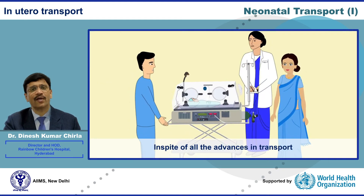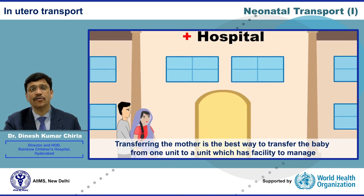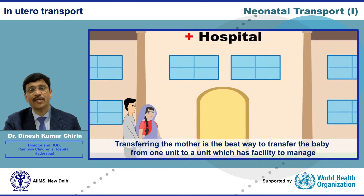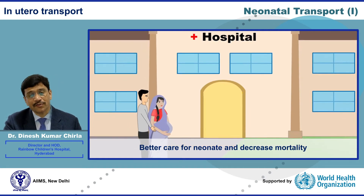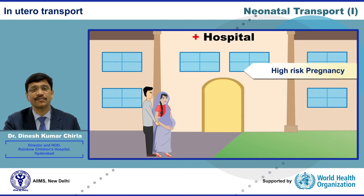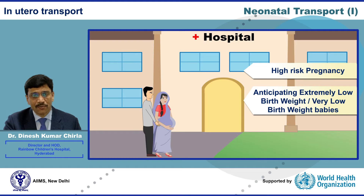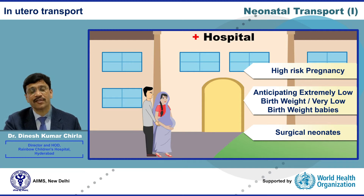In-utero transport — transfer of the mother to a center where neonates can be properly cared for — will definitely improve neonatal outcomes and reduce mortality. In-utero transport is still the best modality of transport, especially in high-risk pregnancies when anticipating extremely low birth weight or very low birth weight babies, or surgical conditions like diaphragmatic hernia and congenital heart disease where the unit lacks facilities to care for those babies after birth.